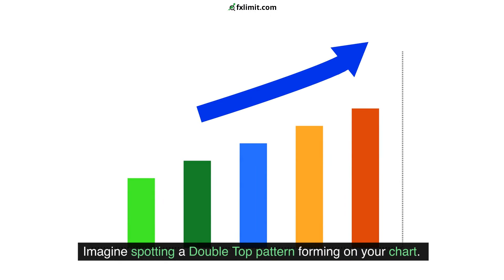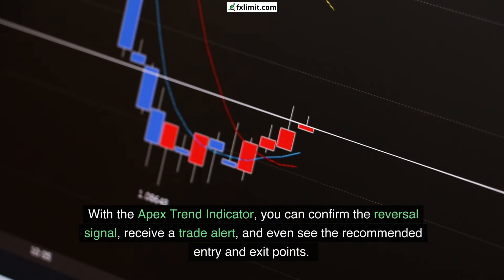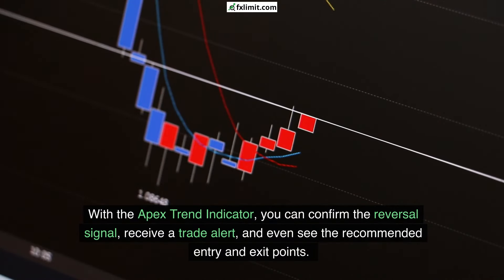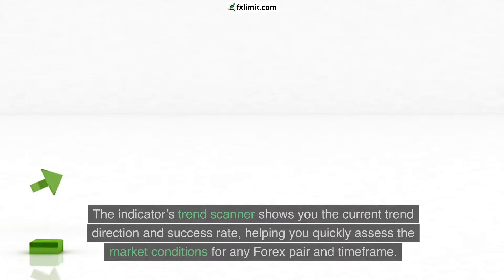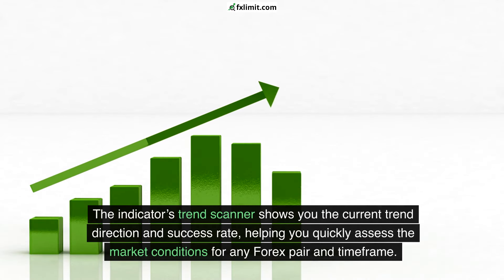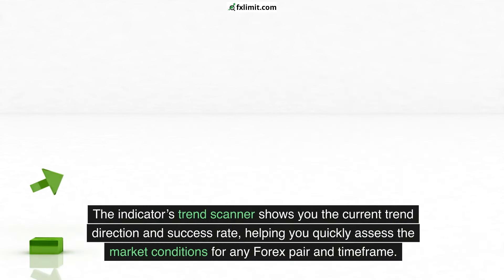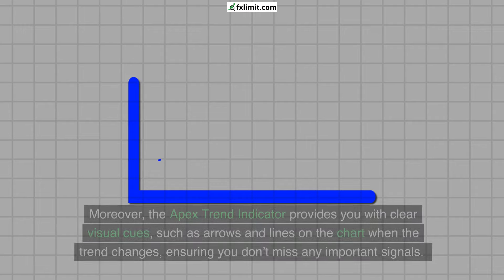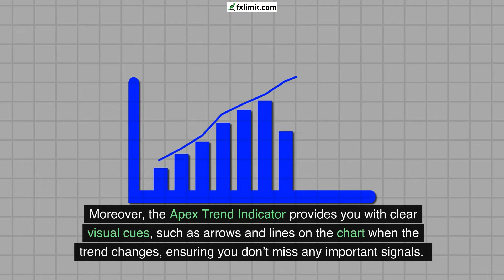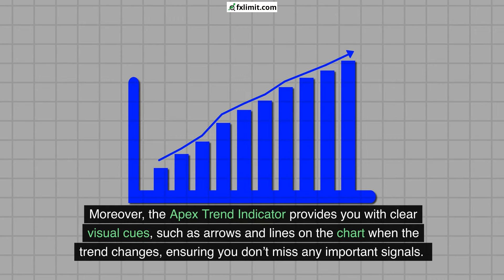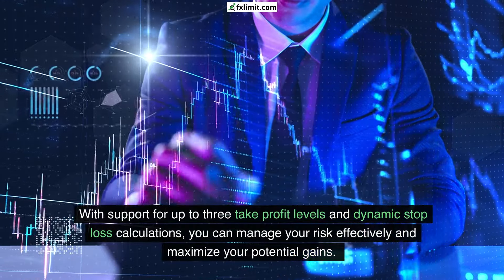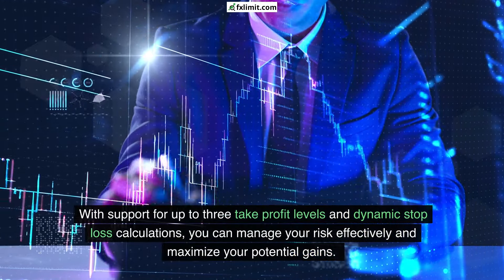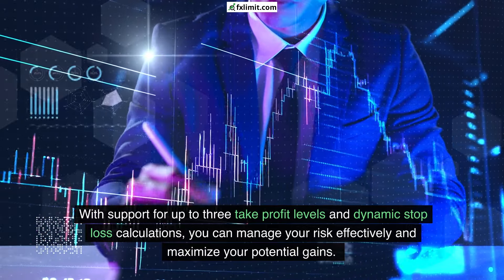Imagine spotting a double top pattern forming on your chart. With the Apex Trend Indicator, you can confirm the reversal signal, receive a trade alert, and even see the recommended entry and exit points. This can save you time and enhance your confidence in executing trades. The indicator's trend scanner shows you the current trend direction and success rate, helping you quickly assess the market conditions for any Forex pair and timeframe. Moreover, the Apex Trend Indicator provides clear visual cues, such as arrows and lines on the chart when the trend changes, ensuring you don't miss any important signals. With support for up to three take-profit levels and dynamic stop-loss calculations, you can manage your risk effectively and maximize your potential gains.